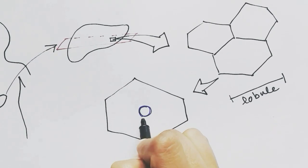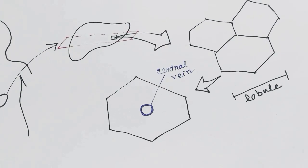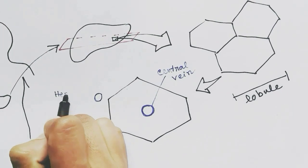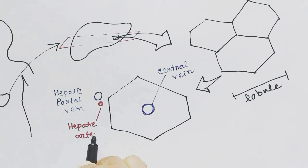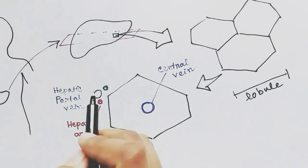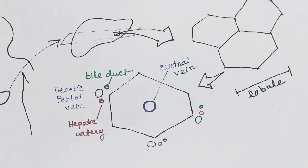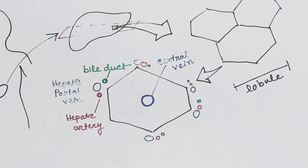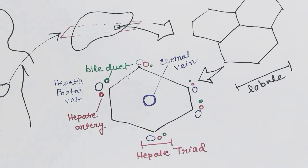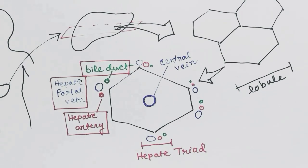If we look into one lobule, we will see at the center of the lobule the central vein, and at the corners of the lobules there are present the hepatic portal vein, hepatic artery, and bile duct. These three are called the hepatic triad, and these hepatic triads are present in almost all the corners of the lobules.